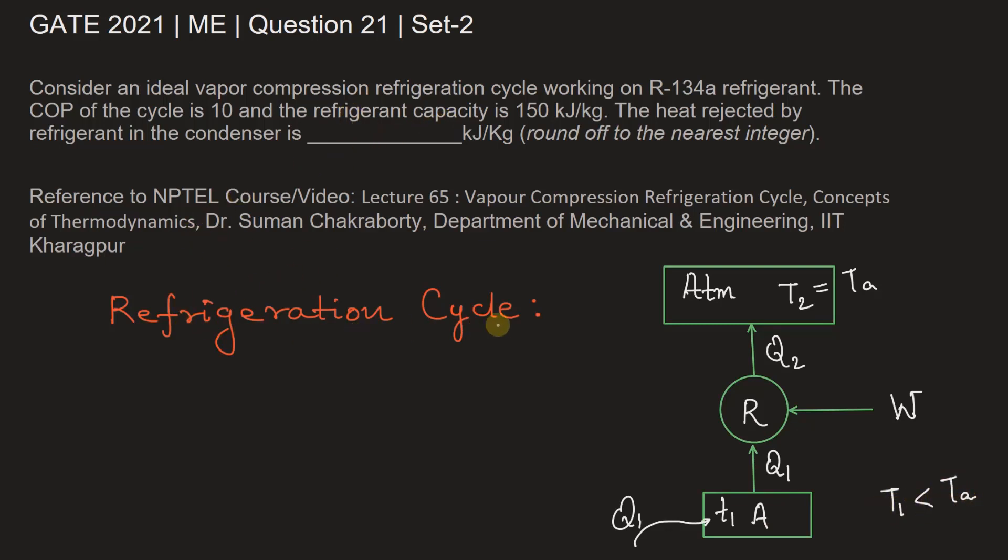Now let's see the calculation for this question. It is given COP of the cycle is 10. COP is coefficient of performance, which is defined as the ratio of heat extracted in the refrigerator - that is the heat taken by the refrigerant from this body - divided by the work done on the refrigerant.